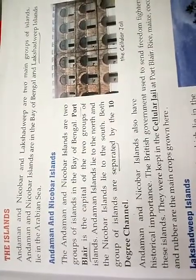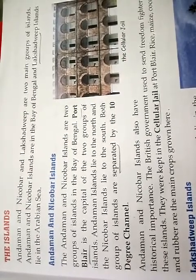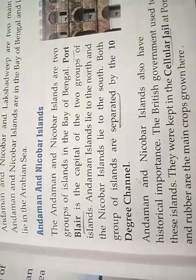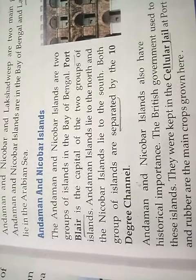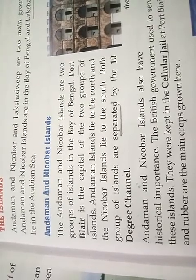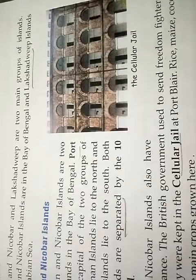The islands. Andaman and Nicobar and Lakshadweep are two main groups of islands. Andaman and Nicobar islands lie in the Bay of Bengal, and Lakshadweep islands lie in the Arabian Sea. The Andaman and Nicobar islands are two groups of islands in the Bay of Bengal. Port Blair is the capital. The Andaman islands lie to the north and the Nicobar islands lie to the south, and both groups are separated by the 10 Degree Channel. This is a picture of the Cellular Jail. The British government used to send freedom fighters to these islands, and they were kept in the Cellular Jail at Port Blair.